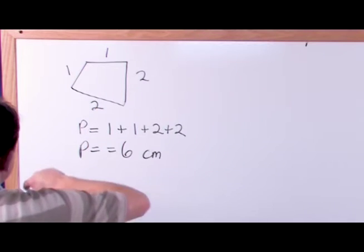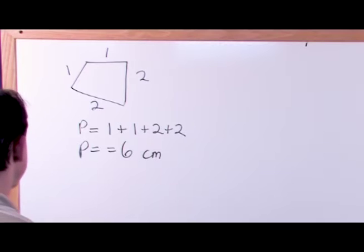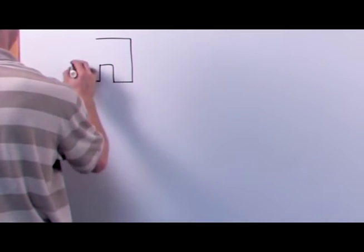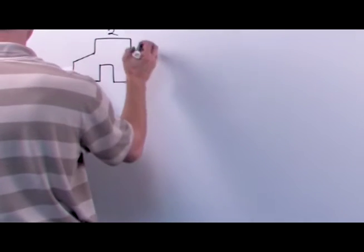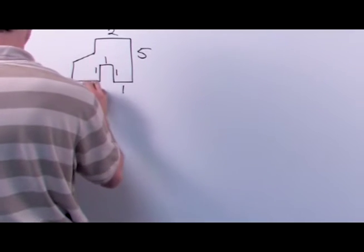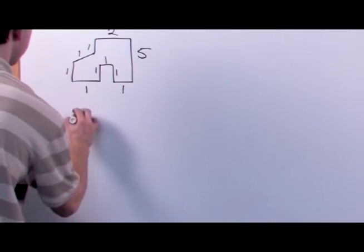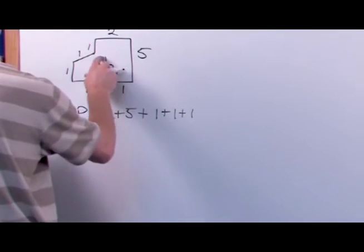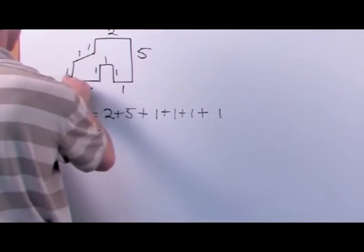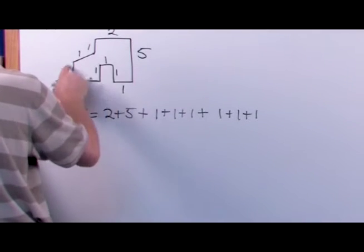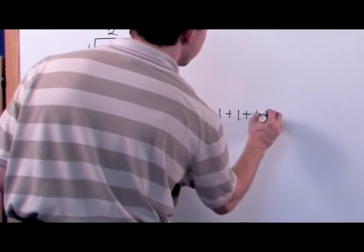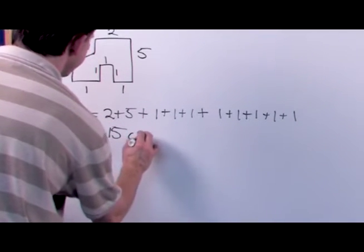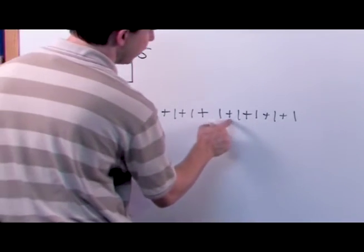If this is in centimeters then your unit will be centimeters, if it's in miles it'll be six miles. If you had a complicated shape like this with sides two, five, one, one, one, one, one, one, one, then the perimeter is just going to be two plus five plus one plus one plus one plus one plus one plus one plus one, and when you add all this up you're going to get 15.